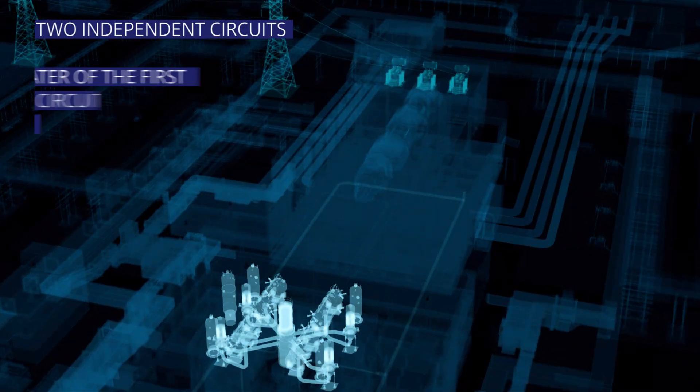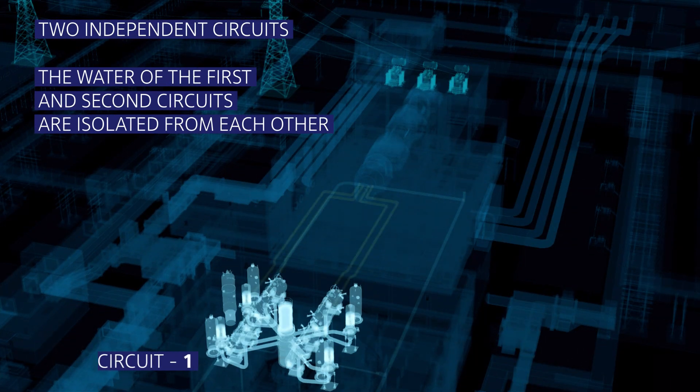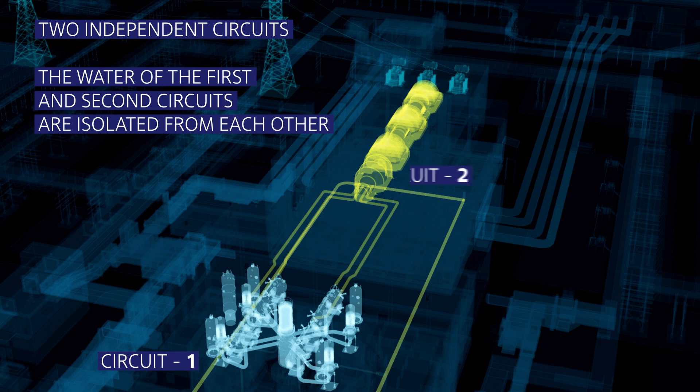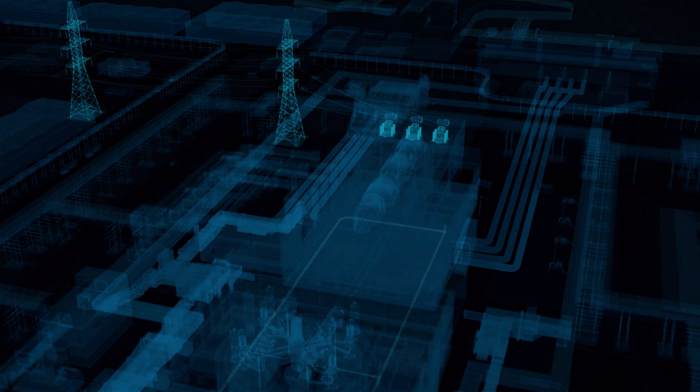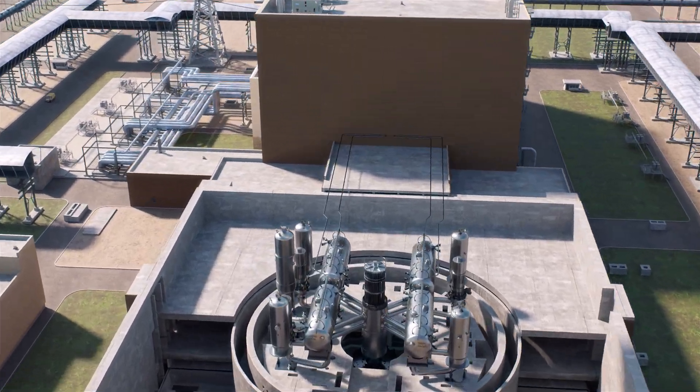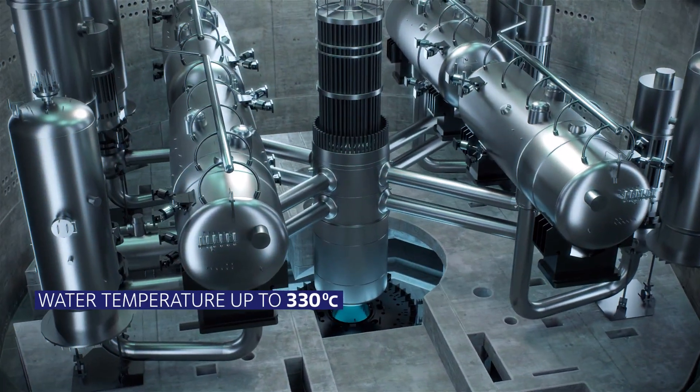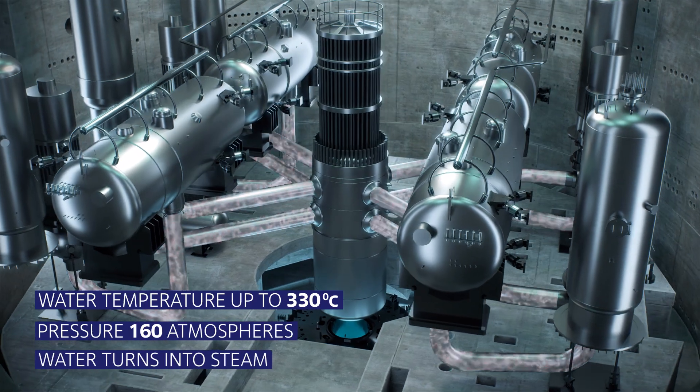There are two independent circuits in each power unit. The water of the first and second circuits is isolated from each other. In the first circuit, the water is heated. Then it gives off heat to the water of the second circuit.